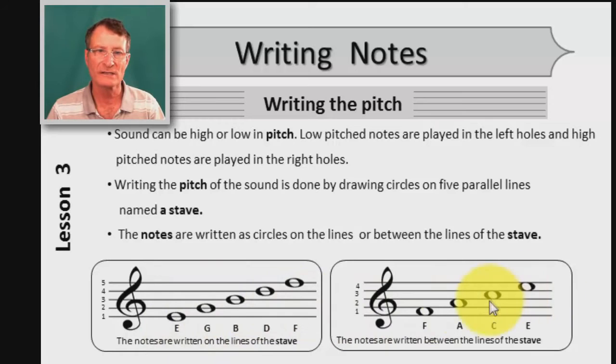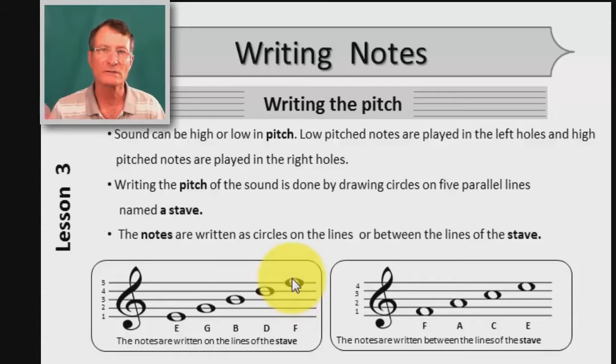The notes can be drawn on the line of the stave or between the line of the stave. We have five lines. The bottom line is one and the upper one is five, and as we going up the stave the pitch of the note going up.